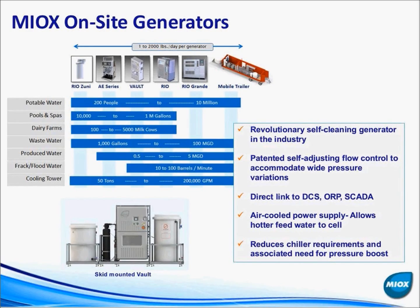We manufacture a huge variety of equipment — from one pound per day (about half a kilogram per day) of free available chlorine all the way up to thousands of pounds per day. All systems are rated in equivalent free available chlorine, so if you're currently using a hundred pounds a day of chlorine gas, you can find the matching unit on our data sheets. Even our thousand-pound-per-day units have a very compact footprint — roughly the size of two refrigerators sitting side by side.